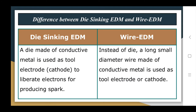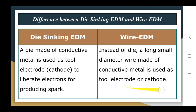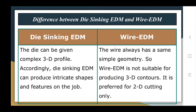Now let us talk about the differences. In die-sinking EDM, a die made of conductive metal is used as the tool electrode or cathode to produce the spark. In wire EDM, instead of a die, a long small-diameter wire made of conductive metal is used as the tool electrode or cathode.